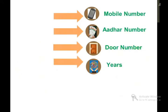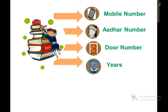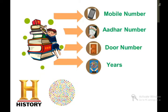If you have any number - you can have a mobile number, an Aadhaar number, or a door number. If you have a subject, for example, you have a few years. If you have a few years, you will create confusion.